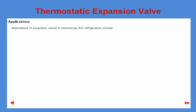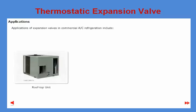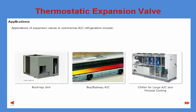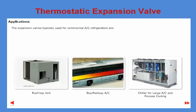Typical applications for expansion valves in the commercial AC section include AC rooftop units, bus or railway AC systems, and chillers for large AC systems and process cooling. The expansion valves typically used for commercial AC refrigeration are T2, TE2, TU, TC, TGE, and PHT.